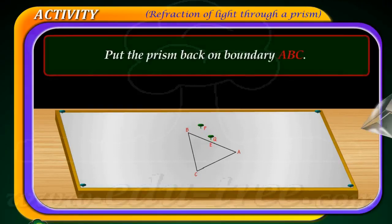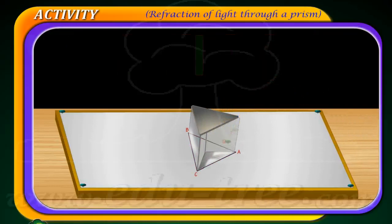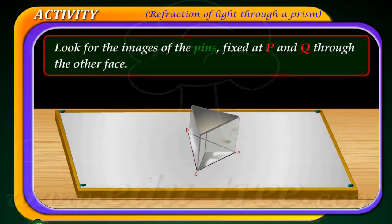Put the prism back on the boundary A, B, C. Look for the images of the pins fixed at P and Q through the other face.